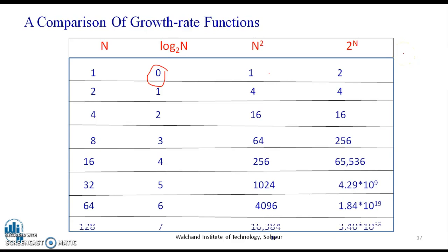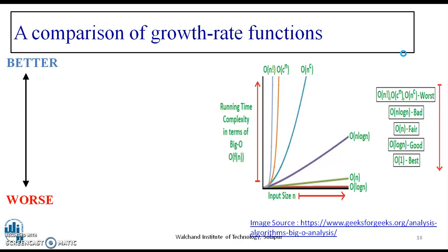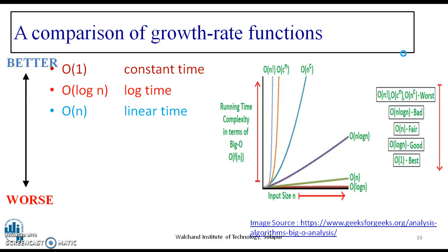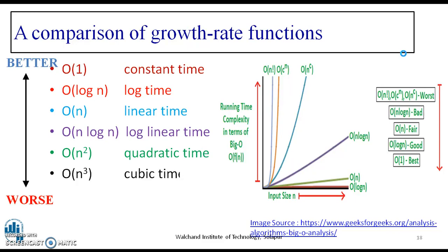So, a comparison of growth rate function, O(1) constant time is better, then followed by log time, that is O(log n), O(n) linear time, O(n log n) logarithmic linear time, quadratic time, then cubic time and exponential is the worst.